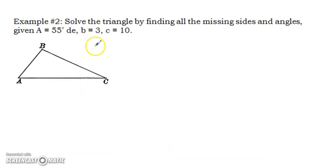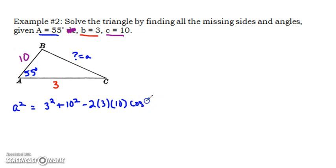Moving along to our second example. We're going to solve this triangle by finding all the missing sides and angles. I'm going to start this for you, and then I'm going to give you a chance to pause and try this on your own. Let's put in the information we know. This is a 55-degree angle, side B is 3, and across from C is a length of 10. So it looks like the first thing I want to do is find this side length. What is A? Because then I'll have all my side lengths.